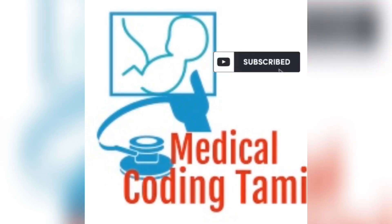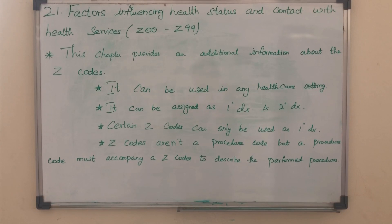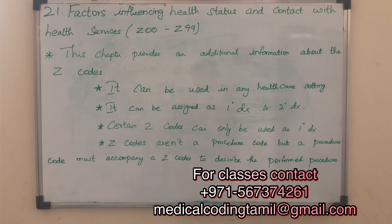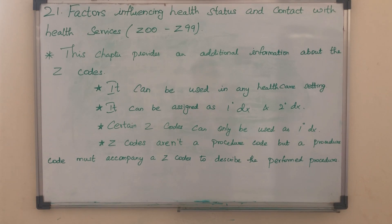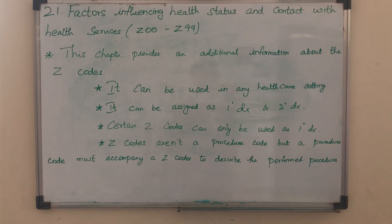We will now see the important chapters in this video. We will cover the last chapter — Chapter 21, which is 'Factors Influencing Health Status and Contact with Health Services.' We describe the health status and health services. The codes we will use are Z00 to Z99. In this chapter, we will see additional information about the Z-codes.